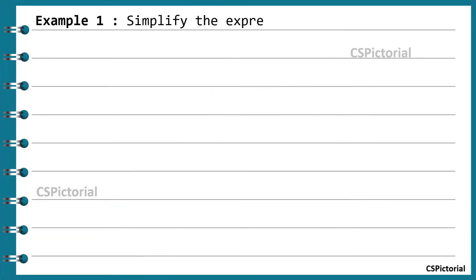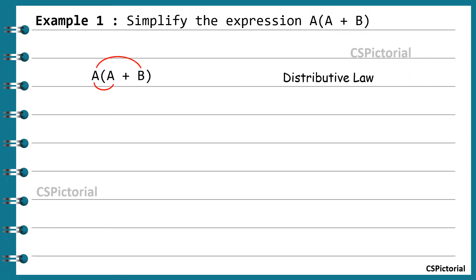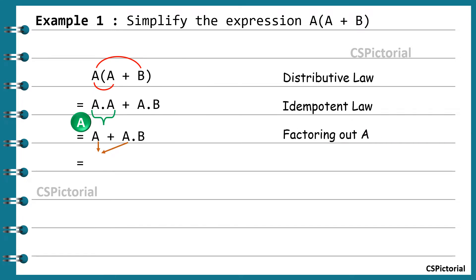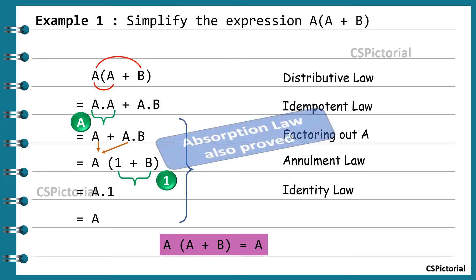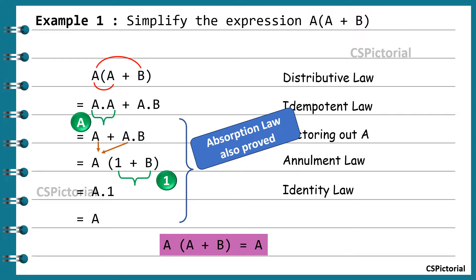Let us first understand the simplification of a(a+b). Applying the distributive law, it becomes a·a + a·b. By the idempotent law, a·a becomes a. Factoring out a gives a(1+b). The annulment law makes 1+b equal to 1, and a·1 equals a. So a(a+b) simplifies to just a. This result also follows directly from the absorption law.